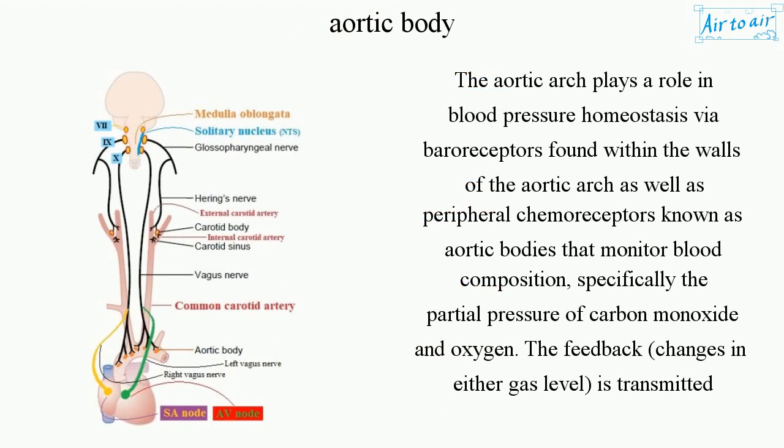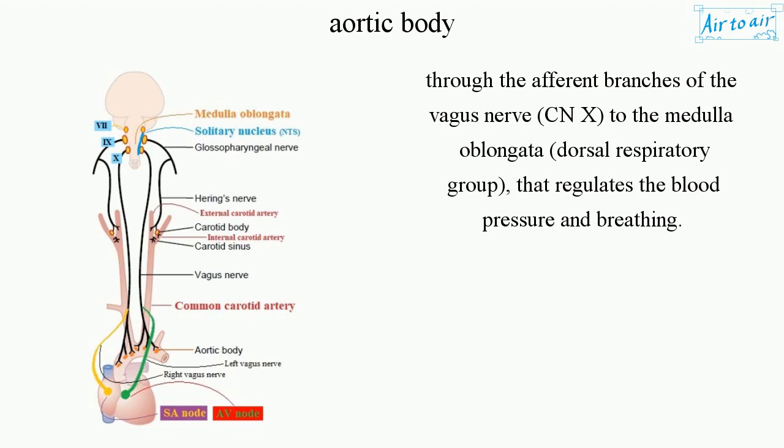The aortic arch plays a role in blood pressure homeostasis via baroreceptors found within its walls, as well as peripheral chemoreceptors known as aortic bodies that monitor blood composition, specifically the partial pressure of carbon dioxide and oxygen. Feedback changes in either gas level are transmitted through the afferent branches of the vagus nerve (CN X) to the medulla oblongata dorsal respiratory group, which regulates blood pressure and breathing.